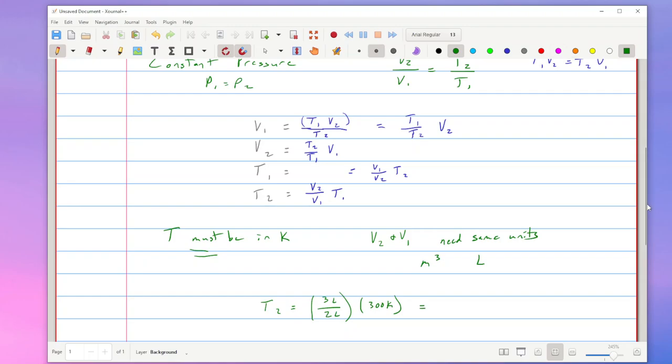Well when you do that calculation, those liters on the top and the bottom cancel out, and we end up with three halves of 300, and that would end up being 450 Kelvin. Check the math yourself. So we need to have the same units for both volumes, but it could be meters cubed, it could be liters. The temperatures must be the same, and they must be Kelvin.